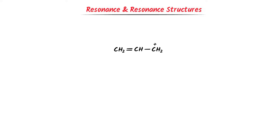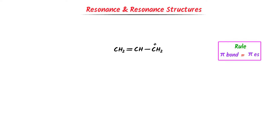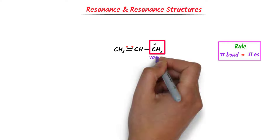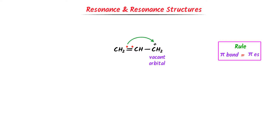Now, what is resonance and what are resonance structures? Consider this compound. Remember this important rule throughout this lecture: pi bond equals pi electrons. There is a pi bond or pi electrons between the first and second carbon. We have already learned that pi electrons move freely. Now, at the third carbon, there is a positive charge or vacant orbit. If there is a positive charge, it is also known as a vacant orbit. So, there is a possibility that the pi electrons shift from the first carbon to the third carbon.